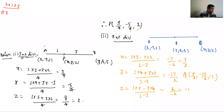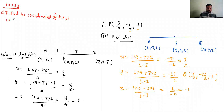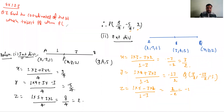Question number 3: Find the coordinates of the point which trisect PQ, where P ka coordinate (2, 1, -3) and Q ka coordinate (5, -8, 3).